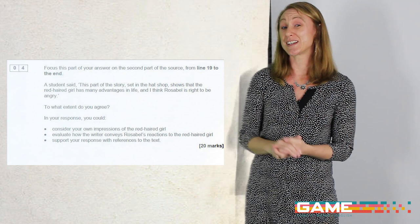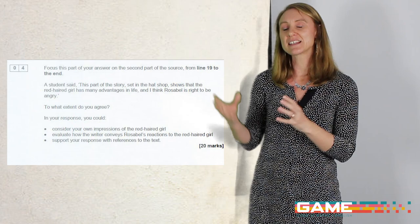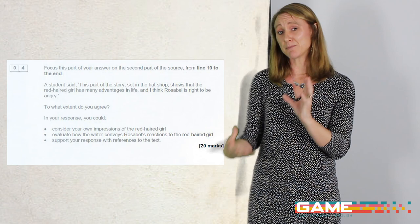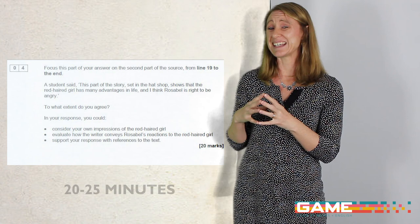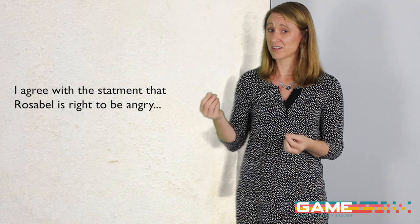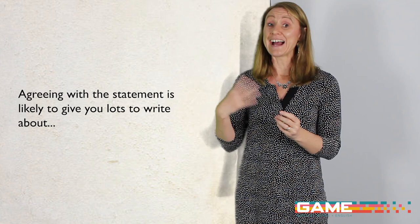Question four is worth 20 marks — a big chunk of marks for this paper. This is the evaluation question where you're given a statement and asked to explain to what extent you agree with it. Because it's 20 marks, you're looking at 20 to 25 minutes, and maybe five or six PEEs if you can manage it. My advice would be to agree with the statement — you've only got 20 to 25 minutes, the person you're writing about is a published writer who has done really well, and you probably don't have enough time to disagree and find sufficient evidence.